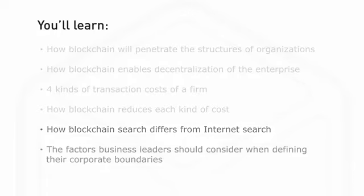We'll dive into how blockchain search differs from internet search and the factors business leaders should consider when defining their corporate boundaries. You'll also be able to define four types of blockchain organizations: one, the distributed application or DApp; two, the autonomous agent; three, the open networked enterprise; and four, the distributed autonomous enterprise.